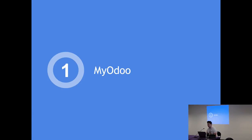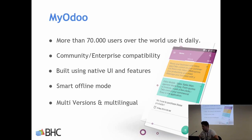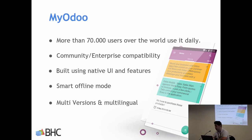So what is Mayadoo? Mayadoo is a native mobile application available on iOS and Android, used by more than 70,000 users around the world. This application is community and enterprise compatible, it has an offline mode allowing you to work without any internet connection. It is compatible with iOS 8, 9, 10, 11, and tomorrow 12, and supports nine languages including Spanish, Italian, French, and Dutch.